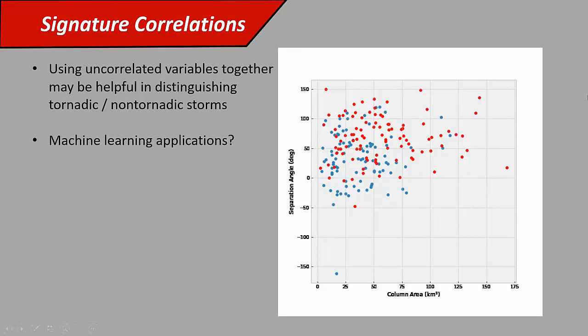Some of these parameters are interesting to look at when they're not correlated in a joint distribution and see what you can potentially pull out of that. I'm plotting separation angle and column area against each other. It's interesting to look at this parameter space because when you've got a separation angle larger than 50 degrees and a column area larger than 50 square kilometers, you generally tend to have tornadic storms. The opposite is true when it's smaller for both. Most of the storms in that box are non-tornadic. So there may be some useful potentially machine learning applications if we can put this into something like ProbSevere or an algorithm like that.